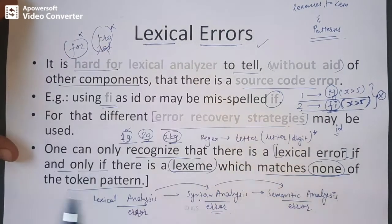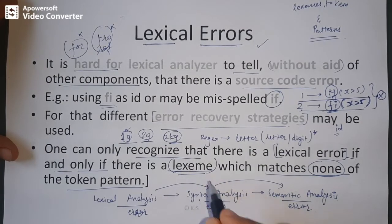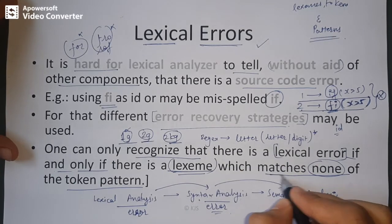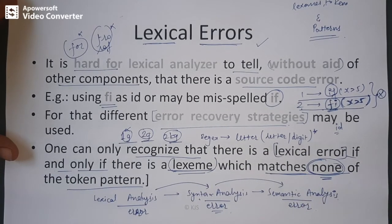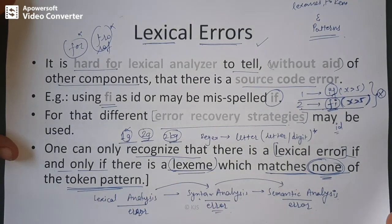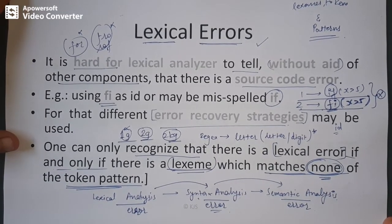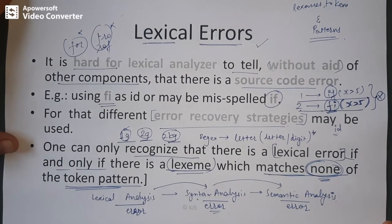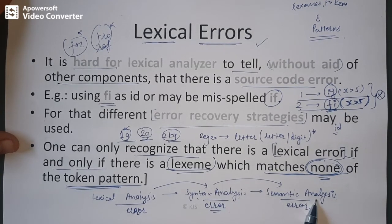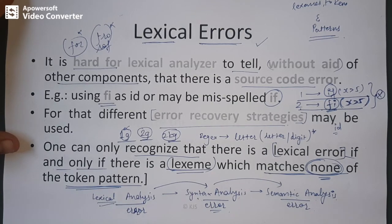So to summarize, a lexical error occurs when a lexeme matches none of the token patterns defined. Lexical errors are a limited category; without syntax and semantic analysis, it is difficult to fully differentiate all errors. Further topics on syntax and semantic analysis will build on the role of the lexical analyzer.